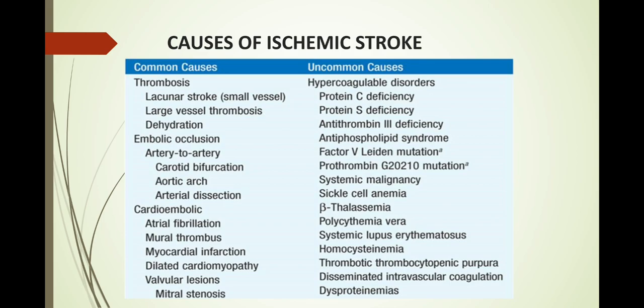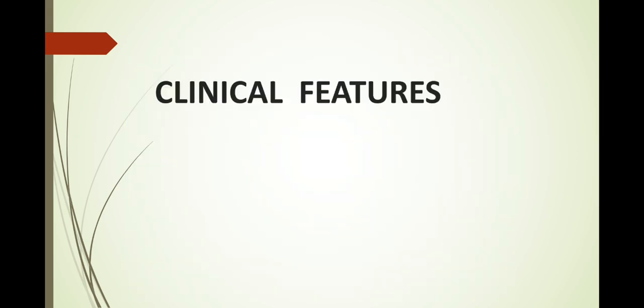The causes of ischemic stroke are divided into three headings: thrombosis, emboli, and cardioembolic. Thrombosis includes lacunar stroke and large vessel thrombosis. Embolic occlusion can be artery-to-artery, carotid bifurcation, or aortic. Cardioembolic causes include atrial fibrillation, myocardial infarction, and dilated cardiomyopathy. Uncommon causes — usually responsible for stroke in young people — include hypercoagulable disorders like protein C deficiency, protein S deficiency, antithrombin 3 deficiency, SLE, and thrombotic thrombocytopenic purpura.